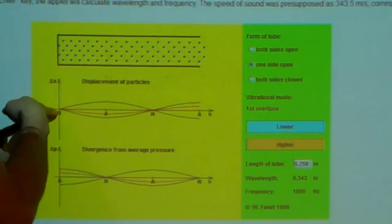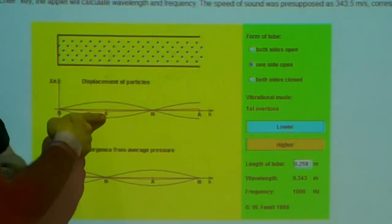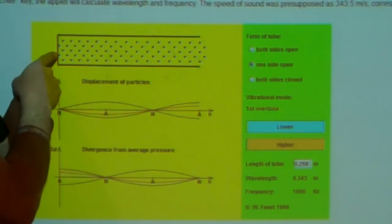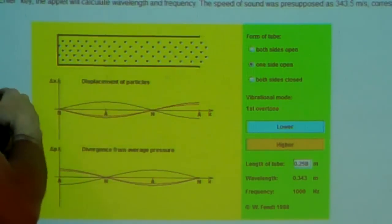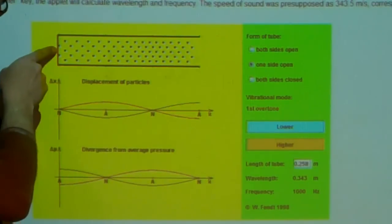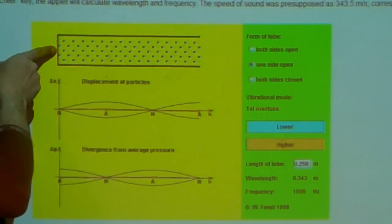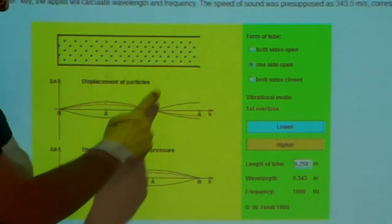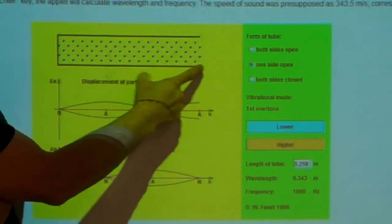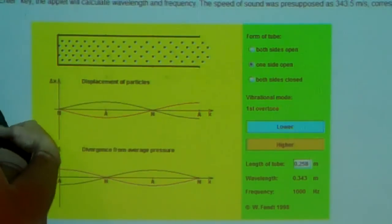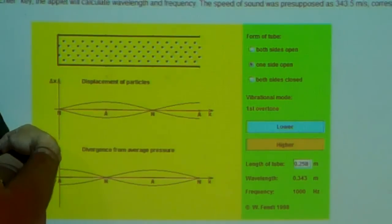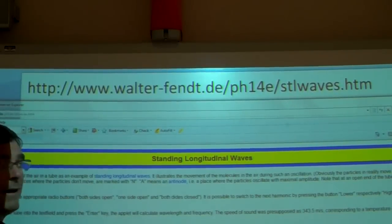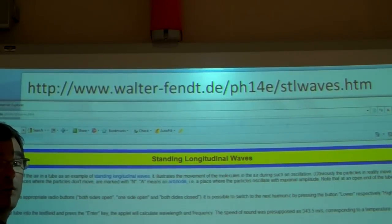Nodes are where there is minimum movement of air, and anti-node is where there is maximum movement of air. So you can look here. These dots represent the molecules of the air. You can see that at a node, these dots are not moving. At this node, those dots are not moving. And at the anti-nodes, we get here and here, maximum movement of the air. Here is the URL where you can find this animation, if you want to look at it in more detail.